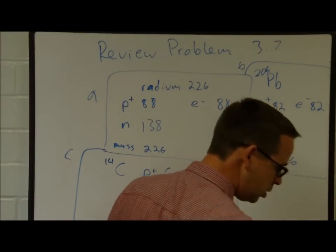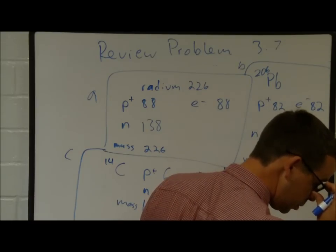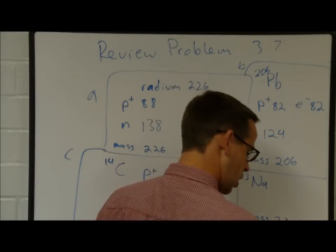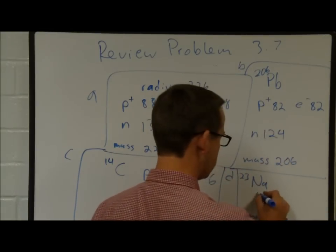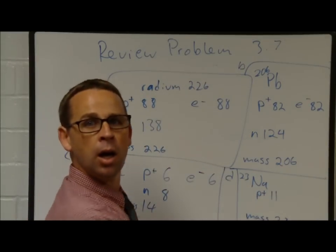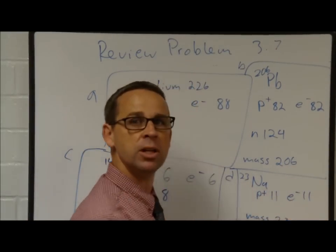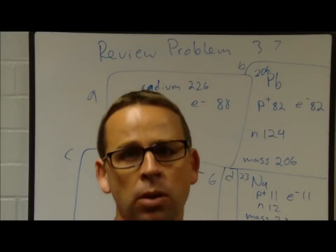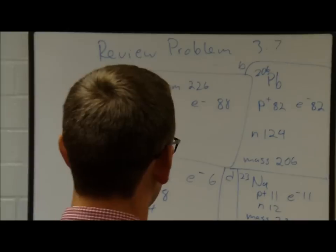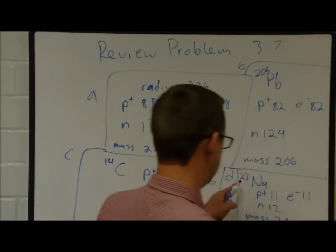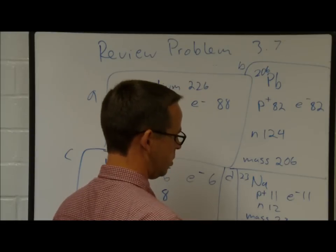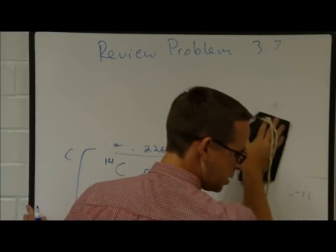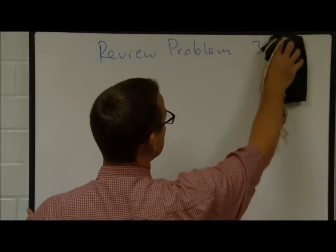Part D is sodium-23. Na-23 has a mass number of 23. We look at the periodic table and see sodium is element number 11. So there are 11 protons and 11 electrons. Neutrons: 23 minus 11 equals 12 neutrons. That was problem 377. Now we're doing 379.